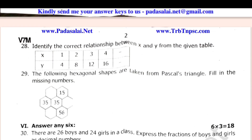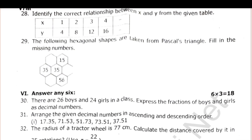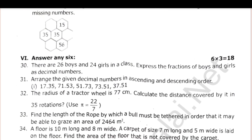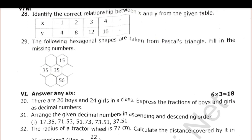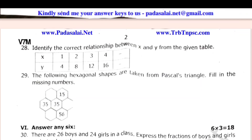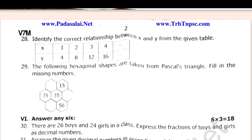The next row is 3 marks — 6 times 3 is 18. If you want to take a total of 6, you will have 6. There are 26 boys and 24 girls in a class. Express the fractions of boys and girls as decimal numbers.